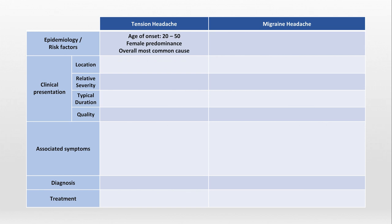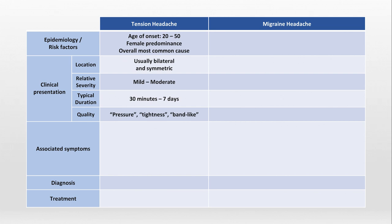Regarding the clinical presentation of tension headaches, they are usually bilateral and symmetric, mild to moderate in relative severity, lasting anywhere from 30 minutes to 7 days, and can be qualitatively described by patients as a pressure, tightness, or band-like sensation. There are no associated symptoms. The diagnosis is clinical, meaning there is no specific diagnostic test. For treatment, NSAIDs or acetaminophen is used to abort the headache, while there is usually no preventative treatment.